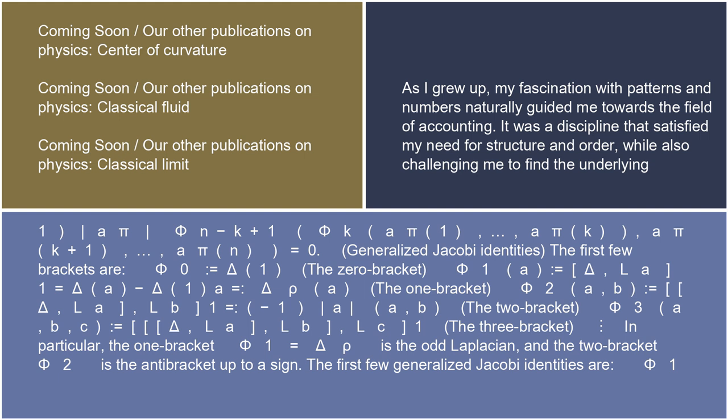The first few brackets are: phi_0 = delta(1) (the 0-bracket); phi_1(A) = [delta, L_A](1) = delta(A) − delta(1) = delta_rho(A) (the 1-bracket); phi_2(A,B) = [delta, [L_A, L_B]](1) = (−1)^|A| {A,B} (the 2-bracket); phi_3(A,B,C) = [delta, [L_A, [L_B, L_C]]](1) (the 3-bracket). In particular, the 1-bracket phi_1 = delta_rho is the odd Laplacian, and the 2-bracket phi_2 is the antibracket up to a sign.